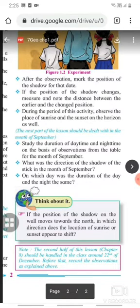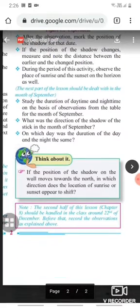The next part of the lesson should be dealt with in the month of September. Study the duration of daytime and nighttime on the basis of observations from the table for the month of September. What was the direction of the shadow of the stick in the month of September? On which day was the duration of the day and night the same? Think about it: If the position of the shadow on the wall moves towards the north, in which direction does the location of sunrise or sunset appear to shift?